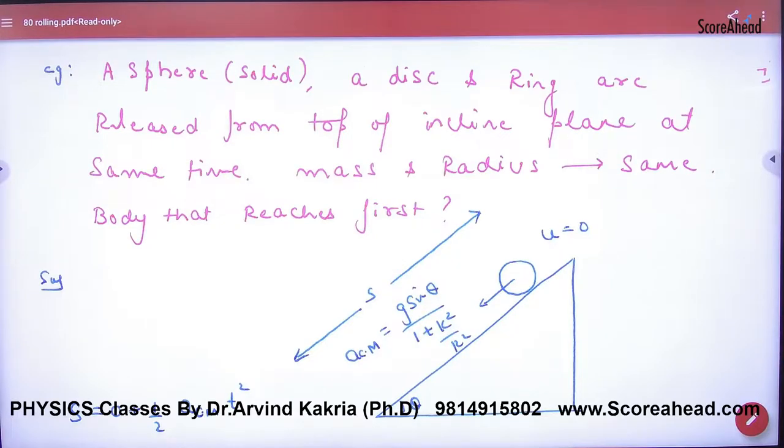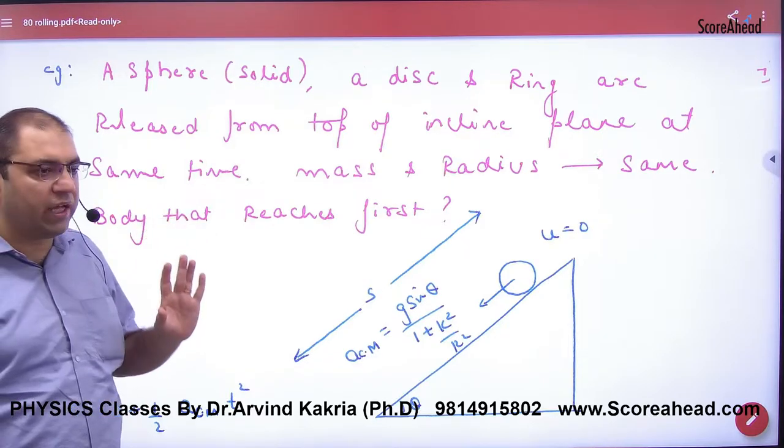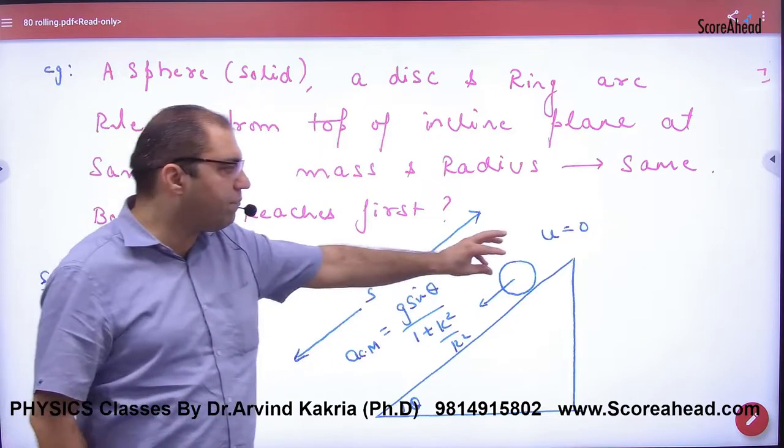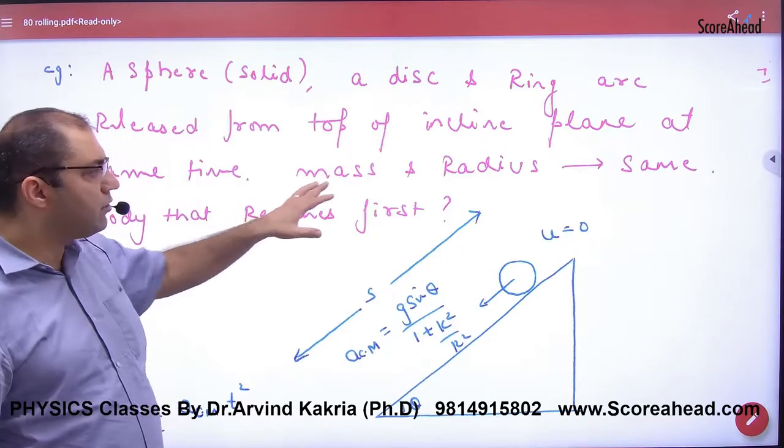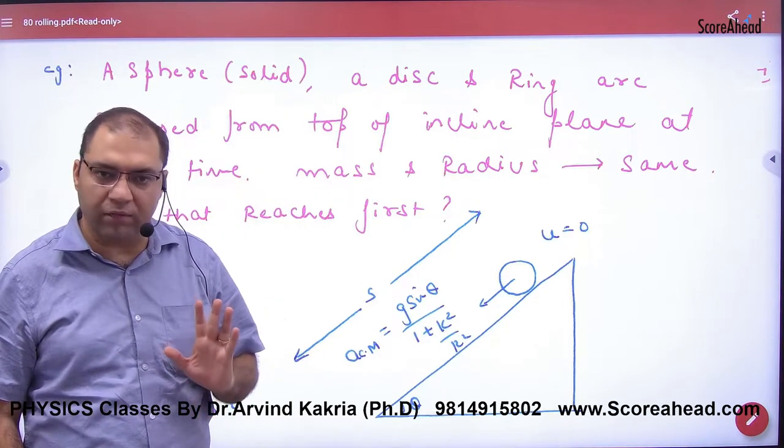A question comes. A sphere, a solid sphere, a disk and a ring are released from the top of the inclined plane at the same time. So three bodies have been taken: a sphere, ring, and disk, released from the top where u is equal to zero. The mass and the radius are the same. Who will reach the first down? This is the question.